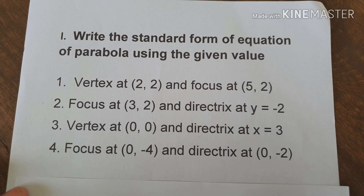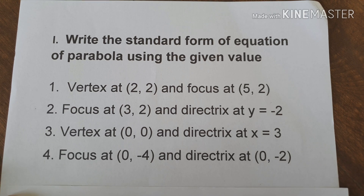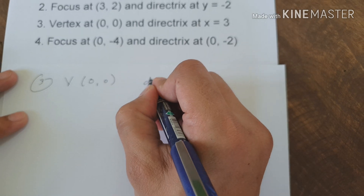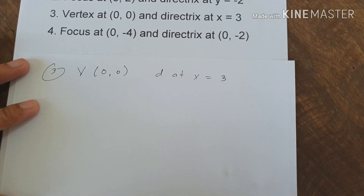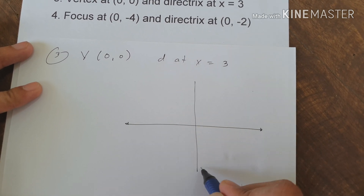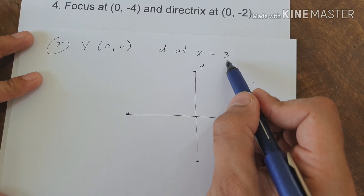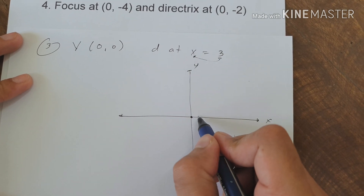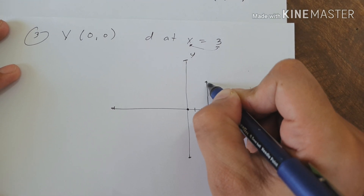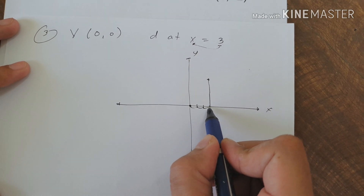Example number 3 is different from examples 1 and 2 because it gives vertex and directrix. The given values are: vertex at the origin (0, 0) and directrix at x equals 3. Let us locate the vertex and the directrix on the graph. The directrix is at positive 3 on the x-axis. The distance from the vertex to the directrix is 3 units.